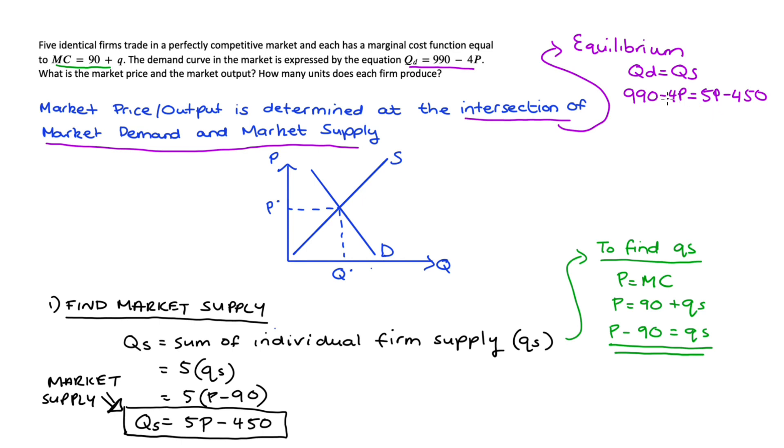So the first thing I'm going to do is add 4P to both sides, I get 990 is equal to 9P. Adding 450 to both sides we get 1440 is equal to 9P. If we divide both sides by 9 we get the price is equal to 160, and that's P*, that's our equilibrium price that obtains when quantity demanded is equal to quantity supplied.